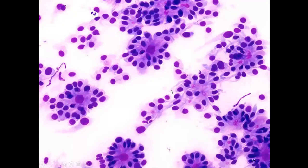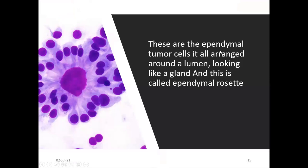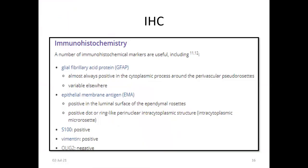Looking at histopathology, these are the rosettes — rose-like formations. These are called perivascular pseudorosettes, and these are the ependymal tumor cells arranged around a lumen looking like a gland, called ependymal rosettes. On immunohistochemistry, these tumors are mostly GFAP positive, epithelial membrane antigen positive at the luminal surface of the ependymal rosettes, showing a positive dot or ring perinuclear intracytoplasmic structure, intracytoplasmic micro-rosettes, and are S100 positive and vimentin positive.